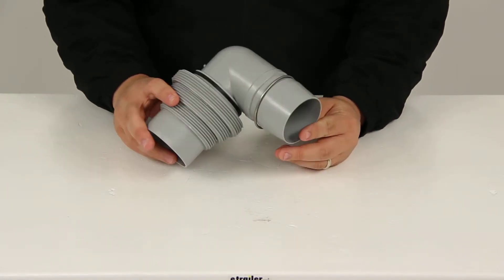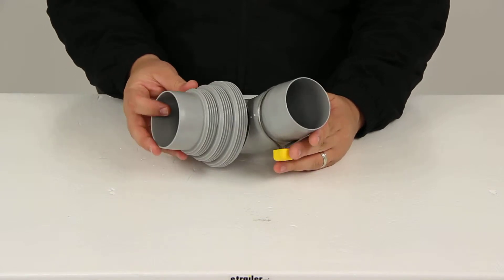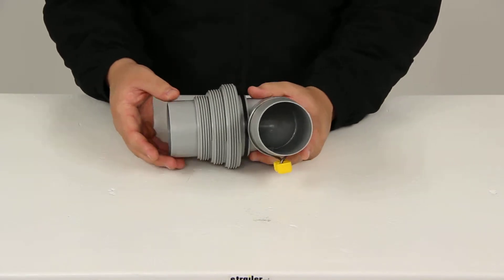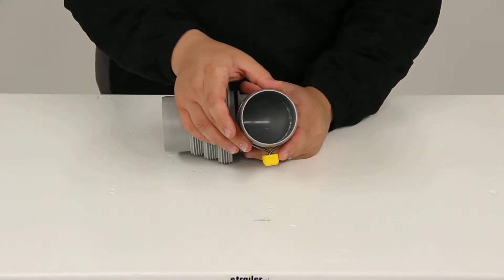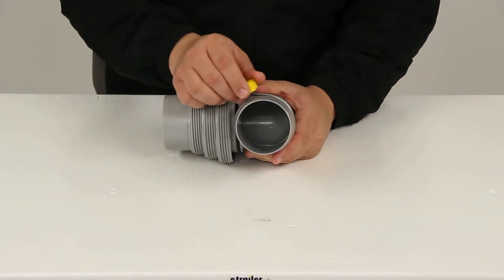It also has a unique tapered design that allows non-restrictive free flow. It's a pretty simple installation, just slide the tapered end into your sewer hose and secure it with the attached spin lock ring.